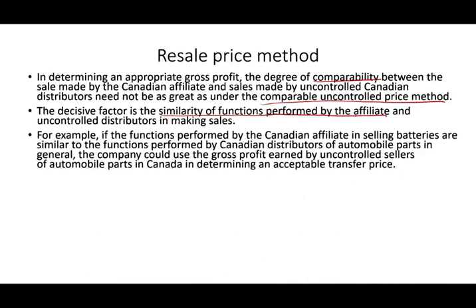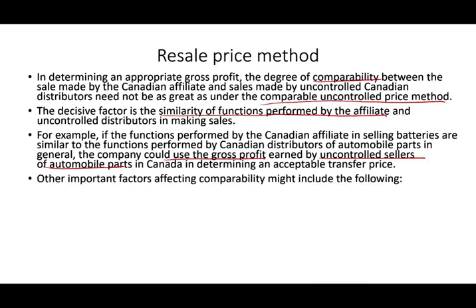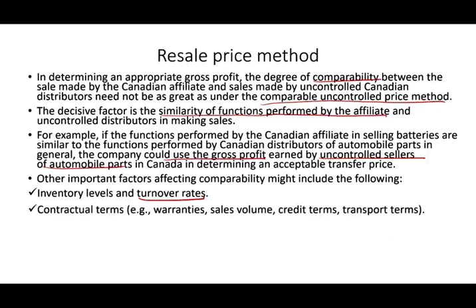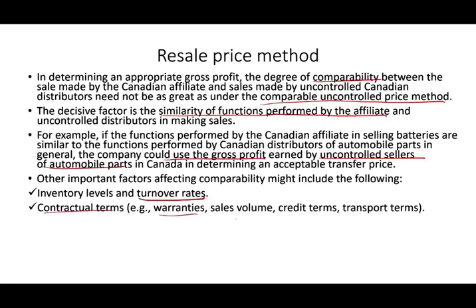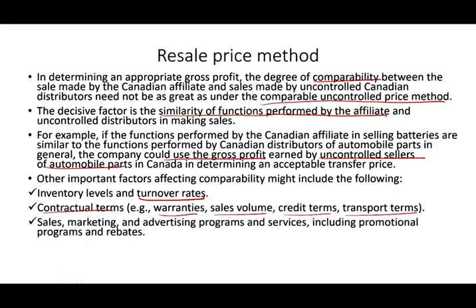For example, if the functions performed by the Canadian affiliate in selling batteries are similar to the functions performed by a Canadian distributor of automobile parts in general, the company could use the gross profit margin earned by uncontrolled sellers of automobile parts in Canada. It doesn't have to be 100% the same — as long as the functions are comparable, we're good. Other factors when using this method include inventory level and turnover rate, contractual terms, warranty, sales volume, credit terms, and transport terms.